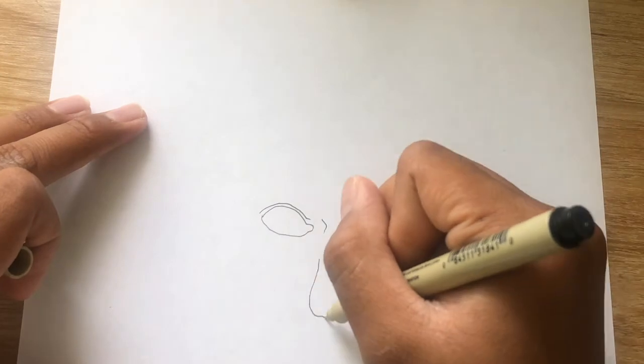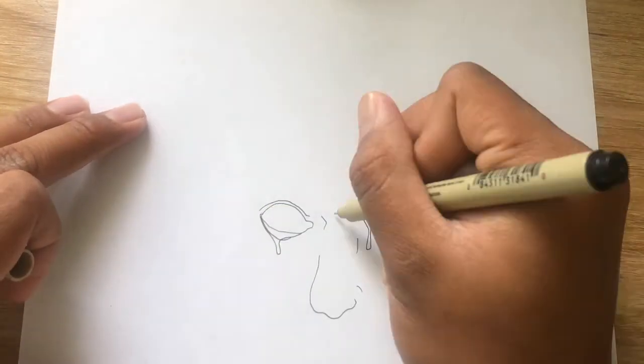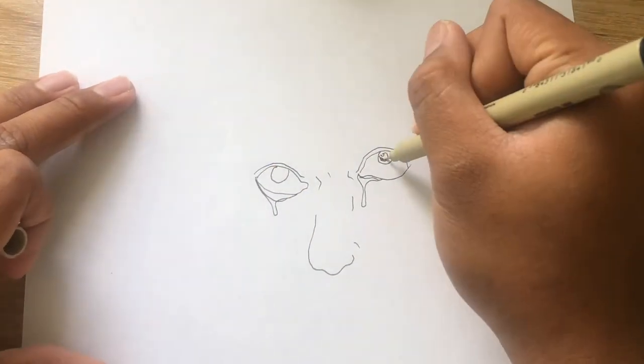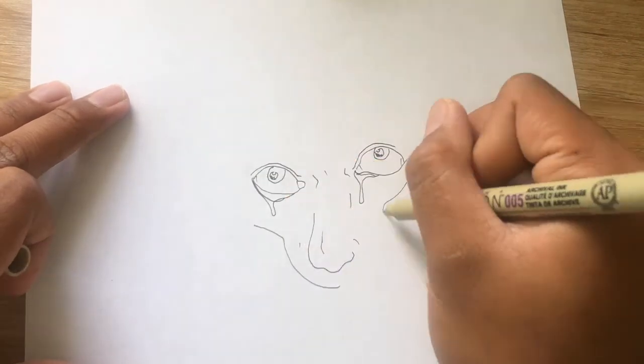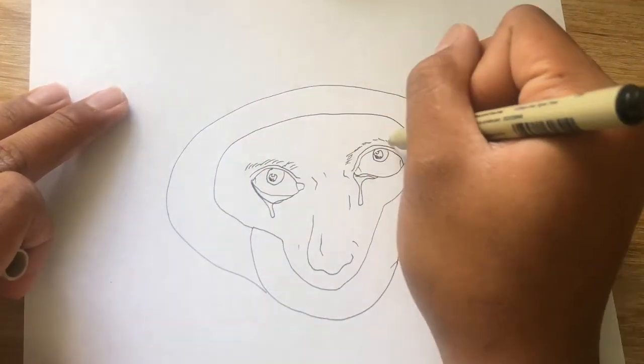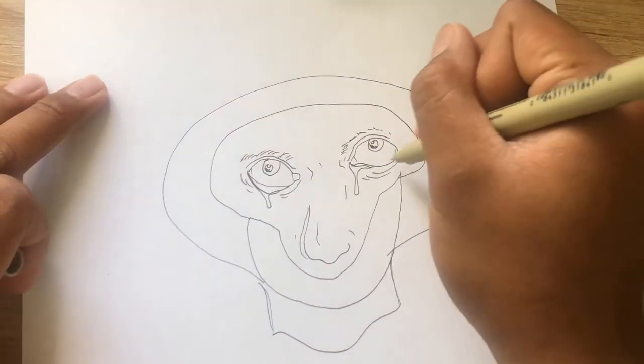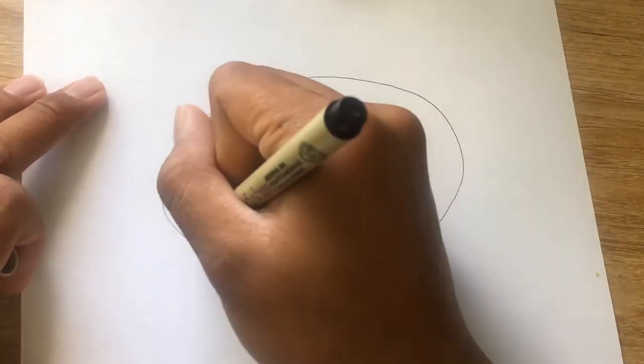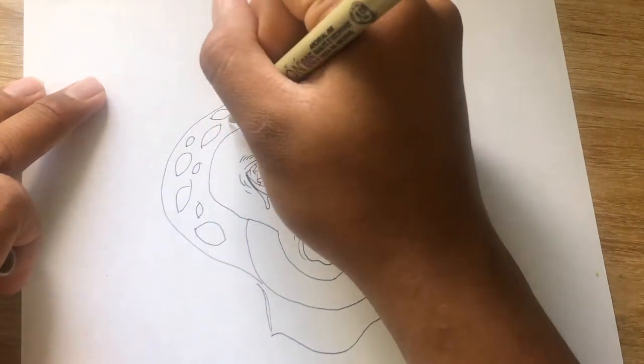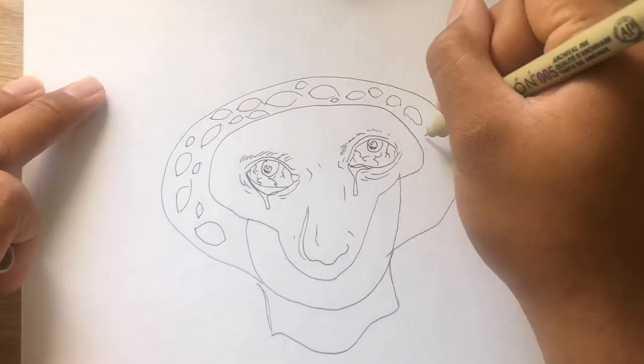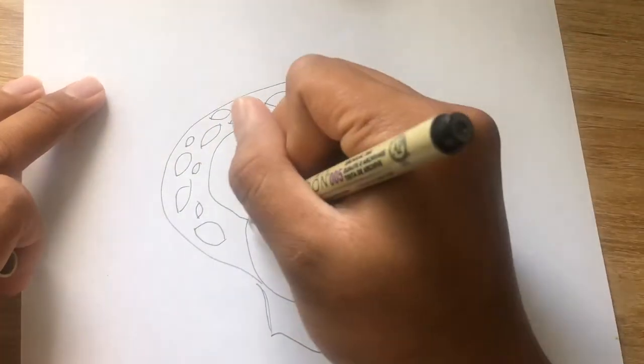This next drawing I want to talk about is called the one with the eyes. I call it the one with the eyes because I wanted to portray the paranoia and fear that comes with psychosis and the anxiety and compulsions that come with OCD. The eyes are made to represent the paranoia, while the smile is meant to portray the compulsion.